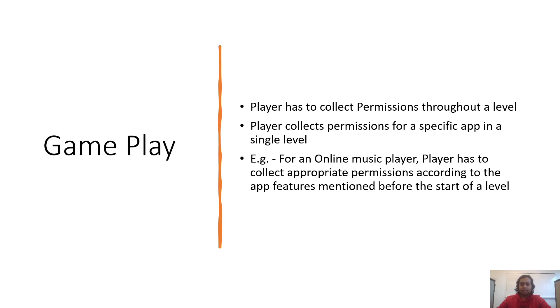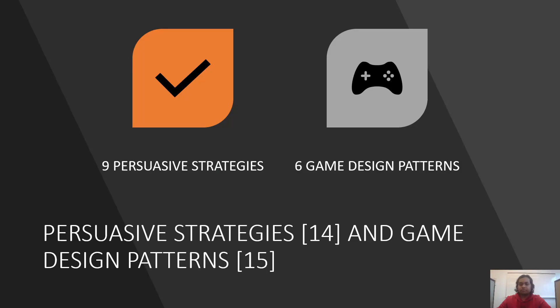We operationalize Android permissions as in-game collectible objects. In a single level, the player collects permissions for a specific app. For example, if the app is an online music player, the player must collect appropriate permissions according to the app features mentioned before the start of a level. We implemented nine persuasive strategies from the framework for persuasive system design by Oinas-Kukkonen, and six game design patterns as collated by Khalifa and others. We will be looking at some of the key persuasive strategy implementations and game design patterns.